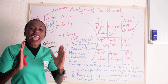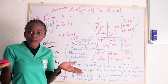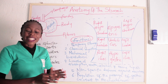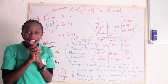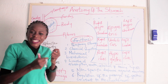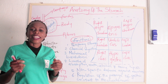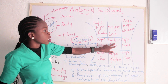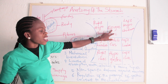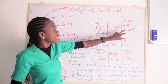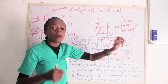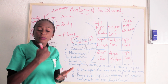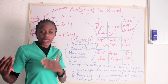In the abdomen we have nine regions. Where is the stomach located in those nine regions? The stomach occupies the umbilical region, the epigastric region, and the left hypochondriac region. That is where the stomach is located.